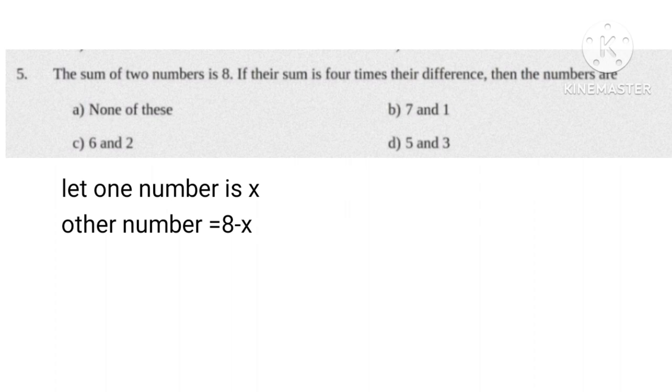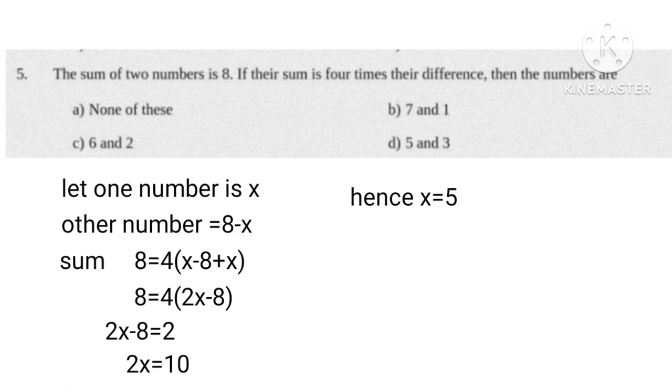Let one number is x, then other number is 8 minus x. According to given conditions, sum 8 equals 4 times x minus 8 plus x equals 4 times 2x minus 8. Hence 2x minus 8 equals 2, 2x equals 10, x equals 5.